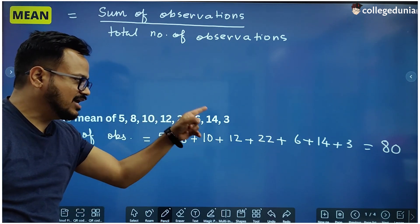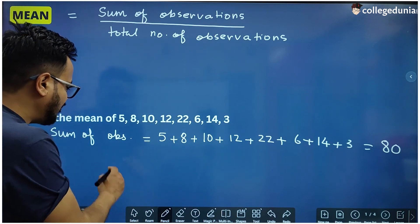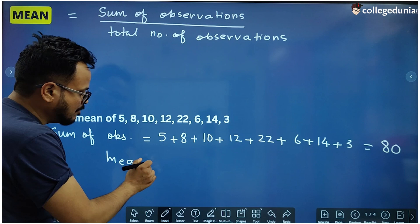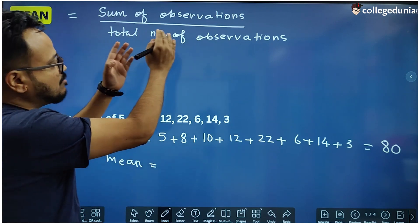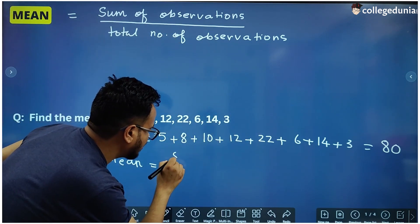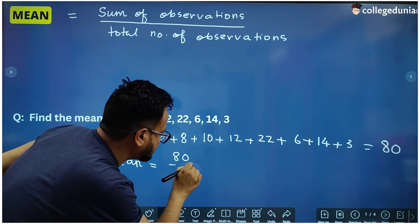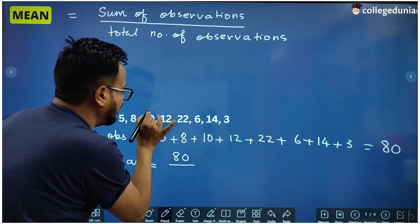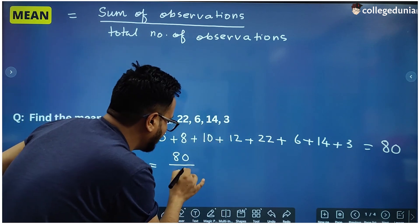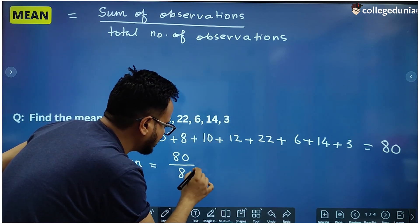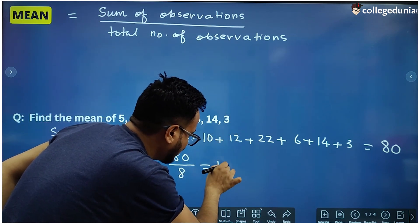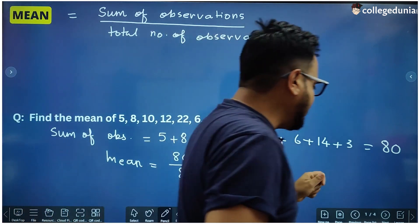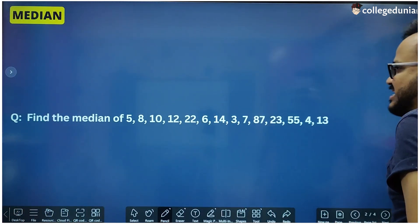And how many observations are there? 1, 2, 3, 4, 5, 6, 7, 8 — so there are 8 observations. The mean is simply sum of observations, which is 80, divided by the total number of observations, which is 8. So the mean is 10. This is how we can find the mean.